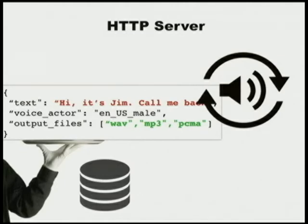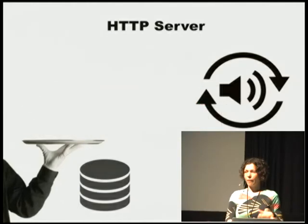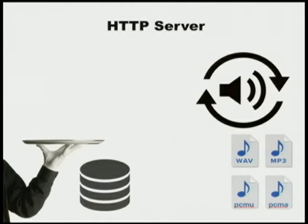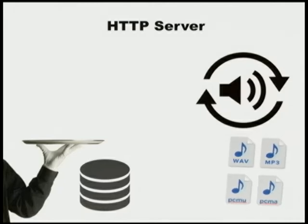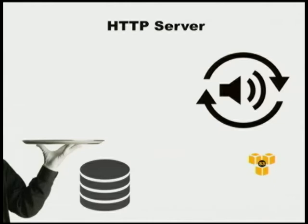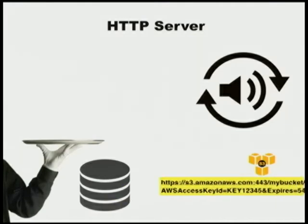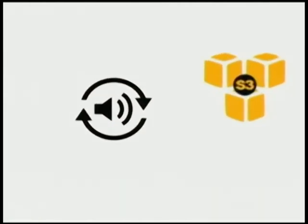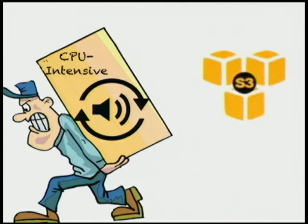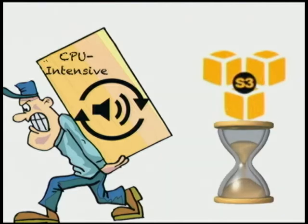We're going to talk about the fun things this server does: audio conversions. We take the text, convert it to a voice, and the resulting WAV file will be converted to other formats. We have all these audio files and we're going to send them over to Amazon Simple Storage Service, known as S3. As the S3 requests complete, we save the S3 URLs to our database. They come in one at a time.